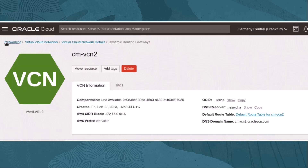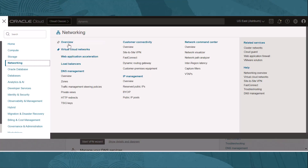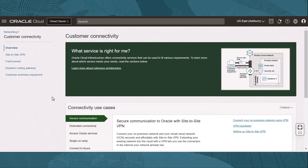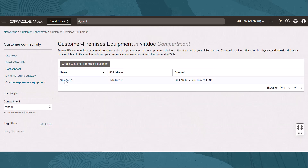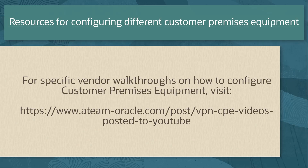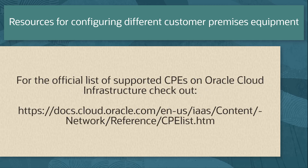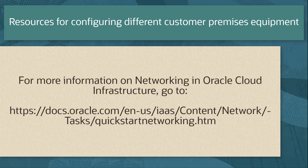To find these resources and the needed information to give to your network engineer, we navigate to Networking and then Customer Connectivity. On this page, we can find details on site-to-site VPN with IPSec tunnel information and customer premise equipment information. The next step is for the network engineer to configure the CPE devices and test the connection between the virtual cloud network and the on-premises network. Here are some additional resources for specific customer premise equipment vendors. For the official list of supported CPEs on Oracle Cloud Infrastructure, check out this page. For more information on networking in Oracle Cloud Infrastructure, check out this quick start networking documentation.